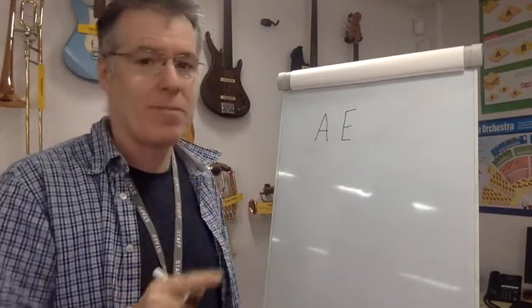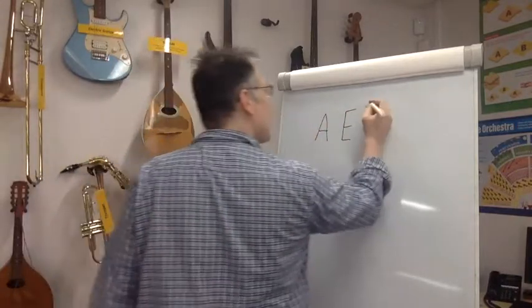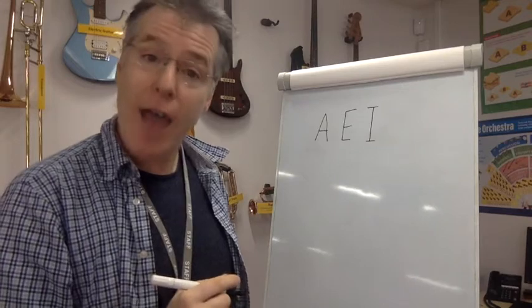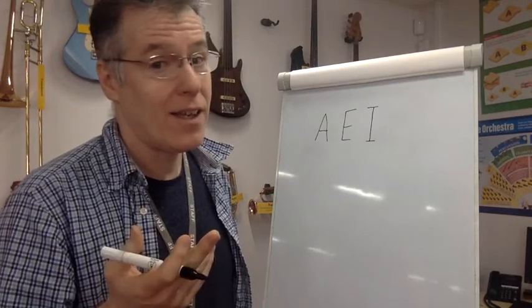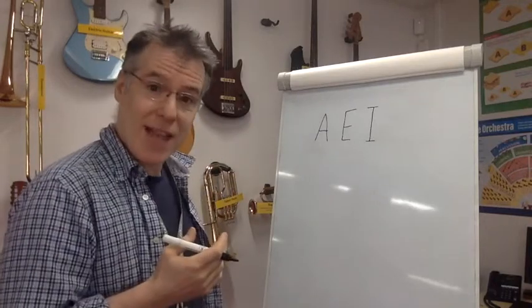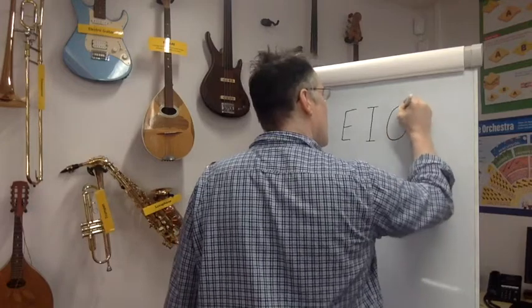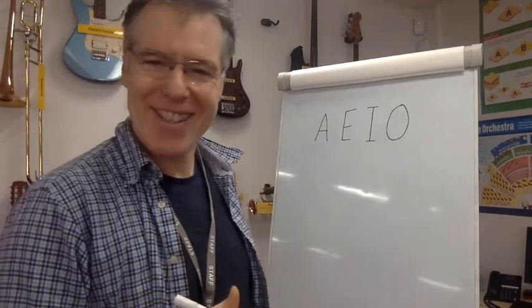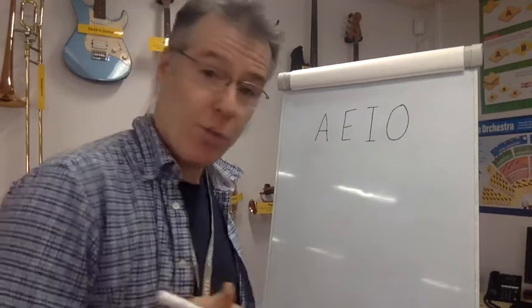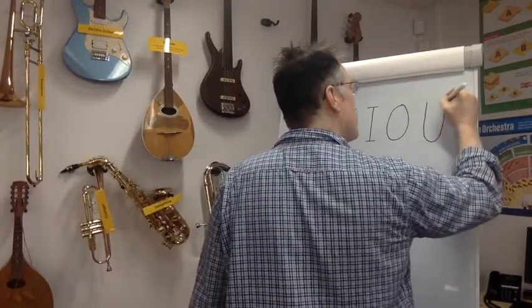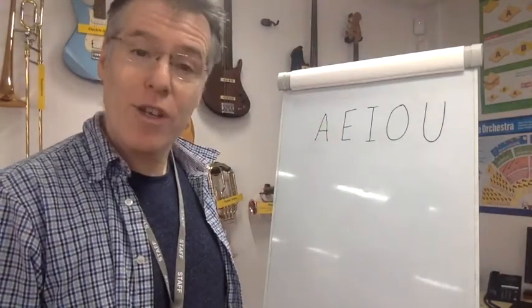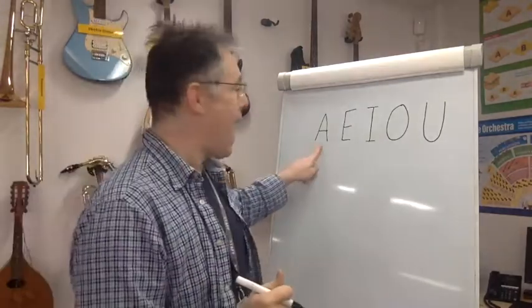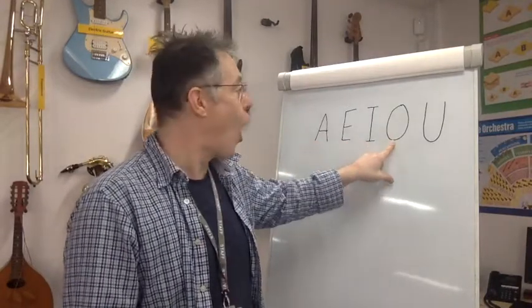Okay, so I've got A and E. Anybody know what comes next? That's right, it's I — the letter I. And the sound of the letter I is I. And the last one is the letter U. And the sound of the letter U is U. But as I said, today we're only using the names of the letters: A, E, I, O, and U.